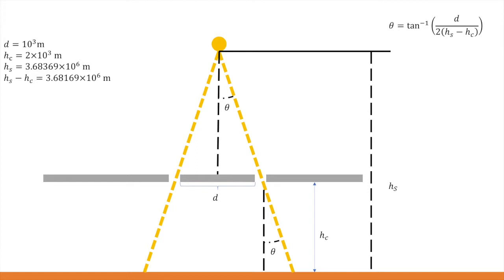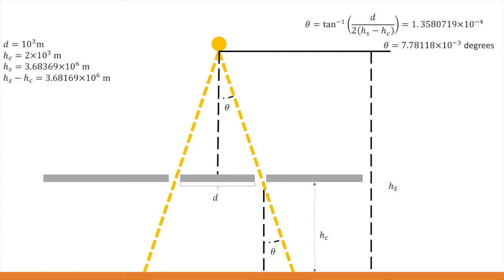That's 7.8 thousandths of a degree. This is a very small angle, and for all practical purposes this is parallel. But there is a problem with my model: I assume that the distance is one kilometer and the height of the clouds is two kilometers. What if these values are not accurate? Well, they're probably not accurate.